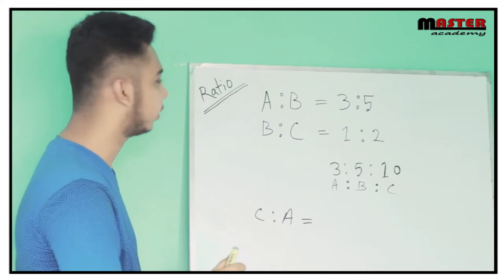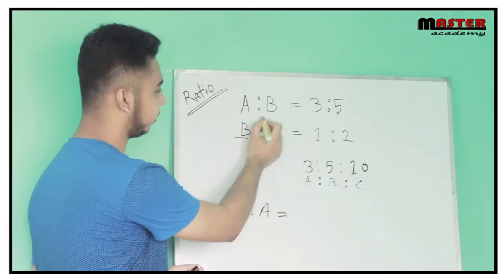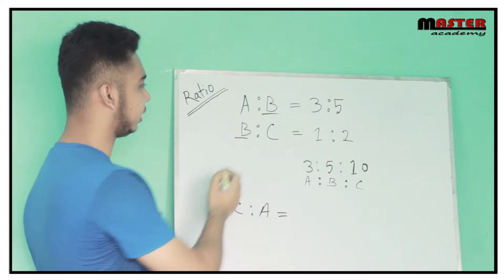A is to B, B is to C. So this is the common variable B. Which is B?